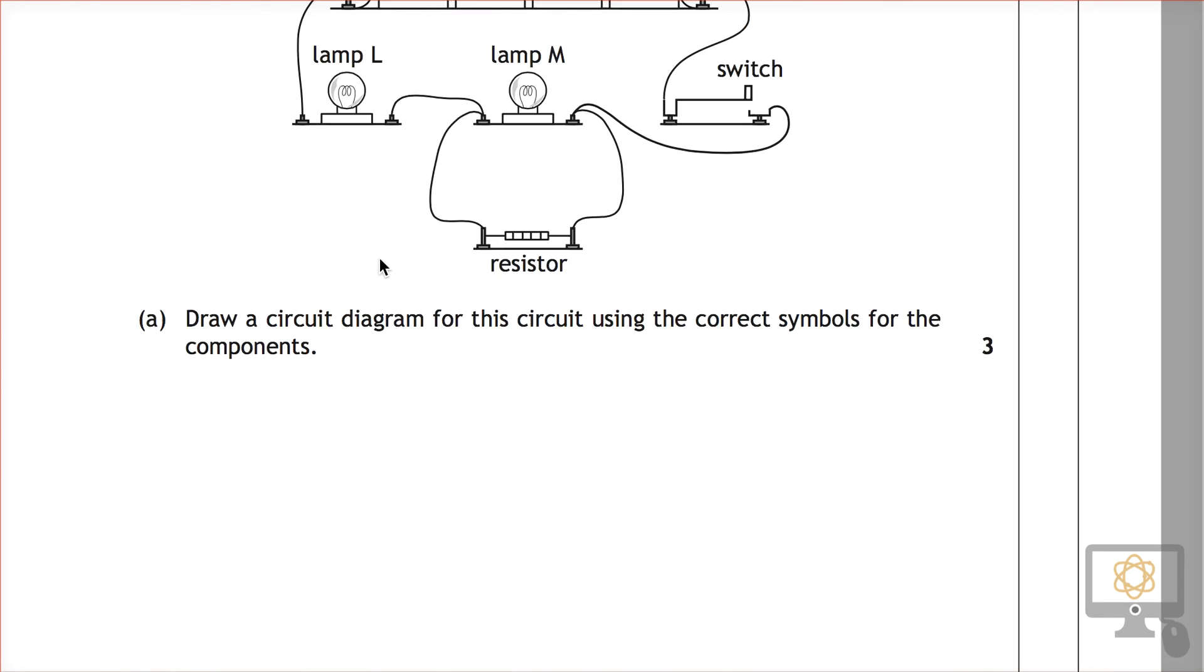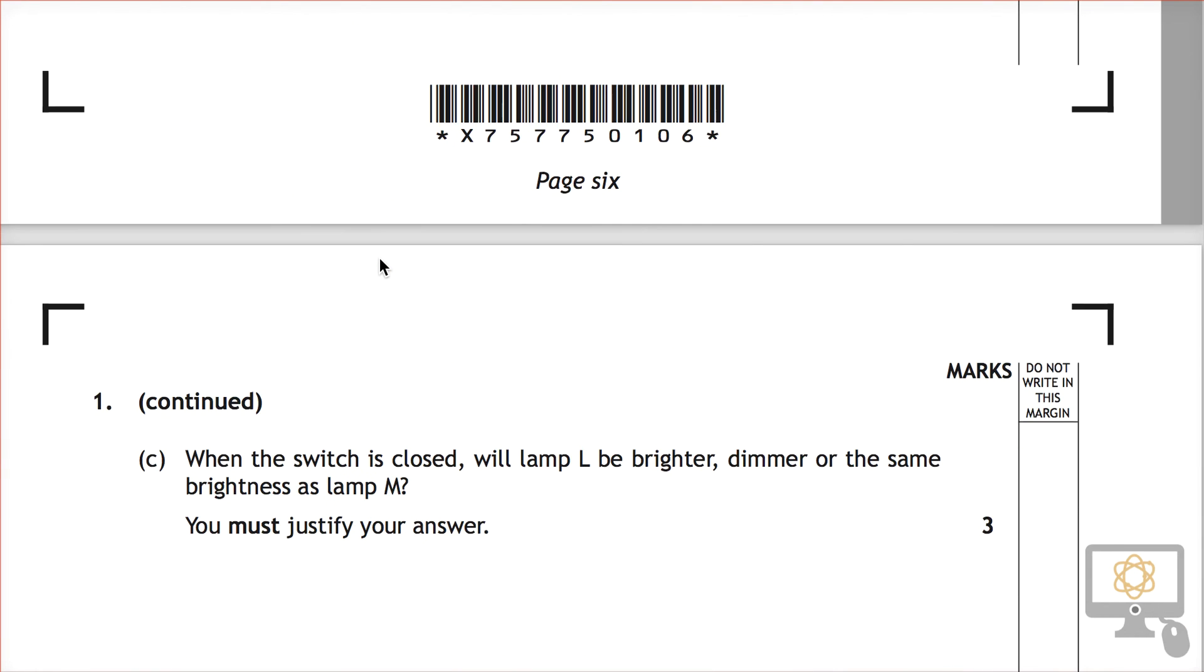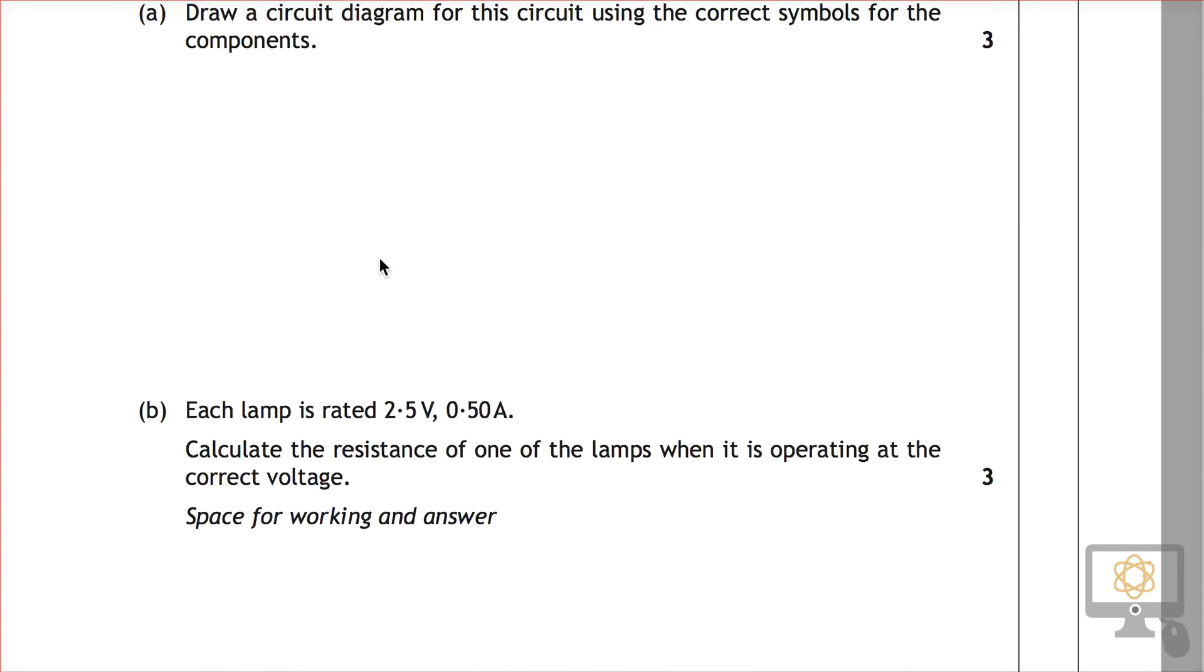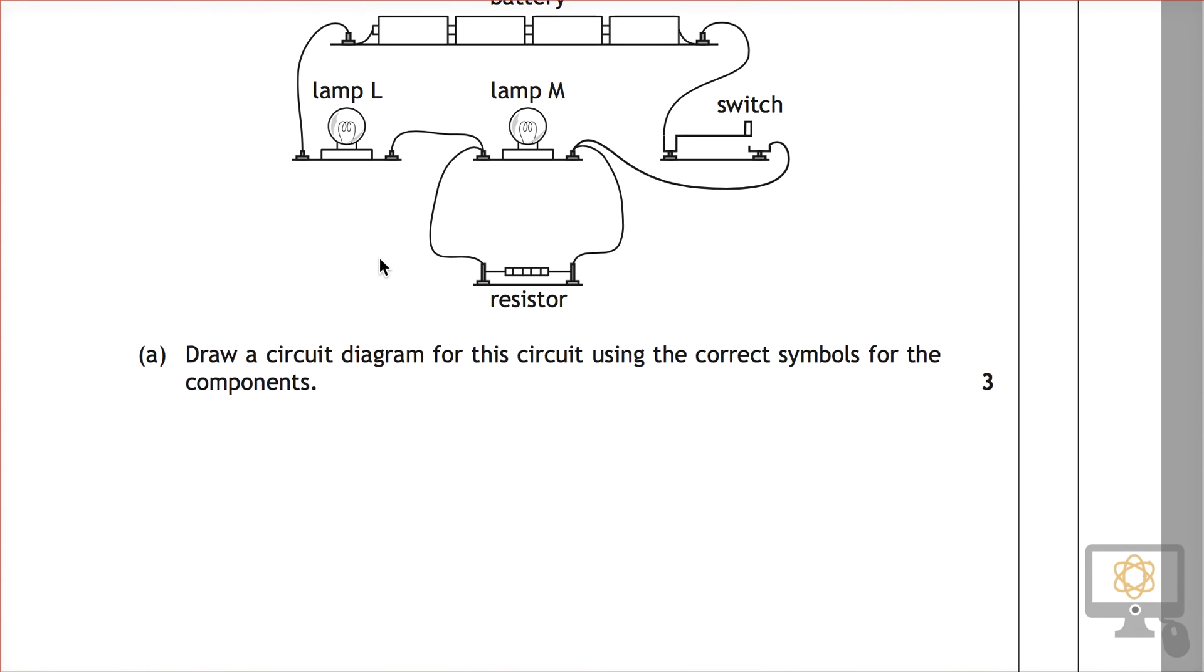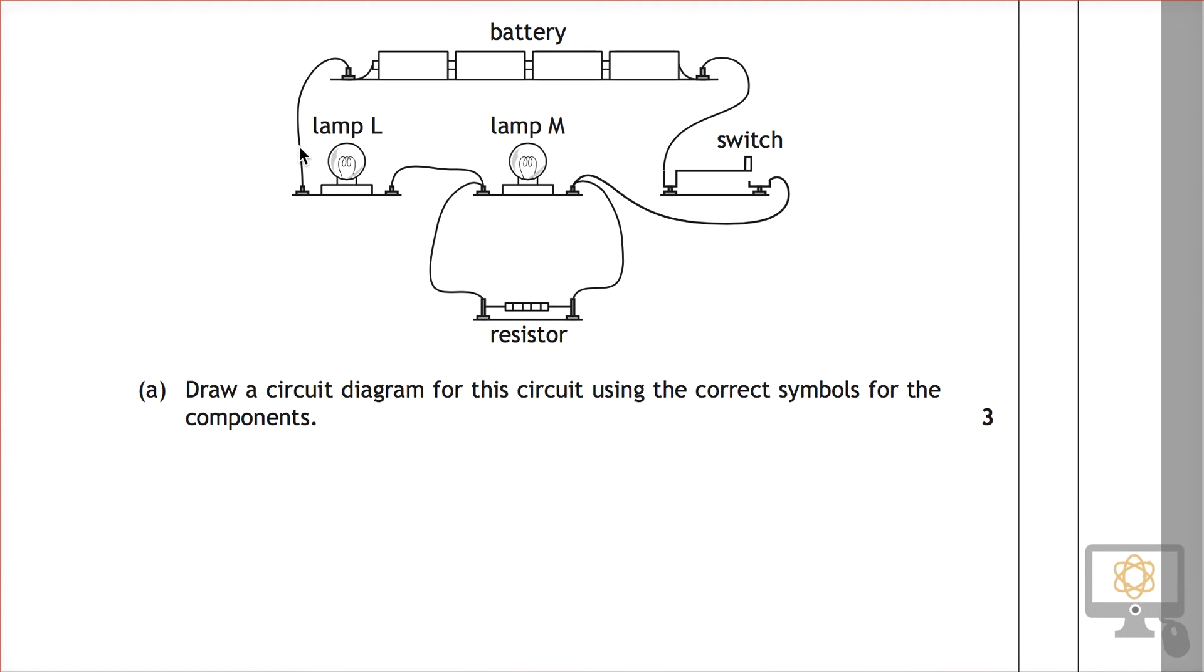When the switch is closed, lamp M—was that lamp M? Lamp L, sorry, will be brighter, dimmer or the same as lamp M? So this is what the question is referring to. We close the switch. Which of these lamps are going to be brighter, or is one of them going to be just the same brightness as the other?